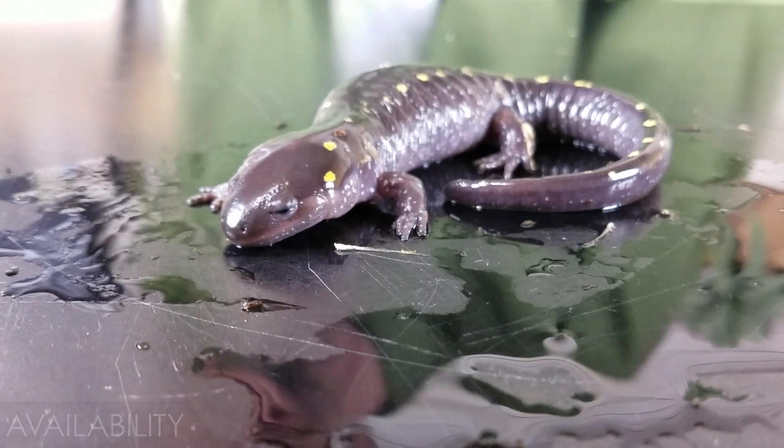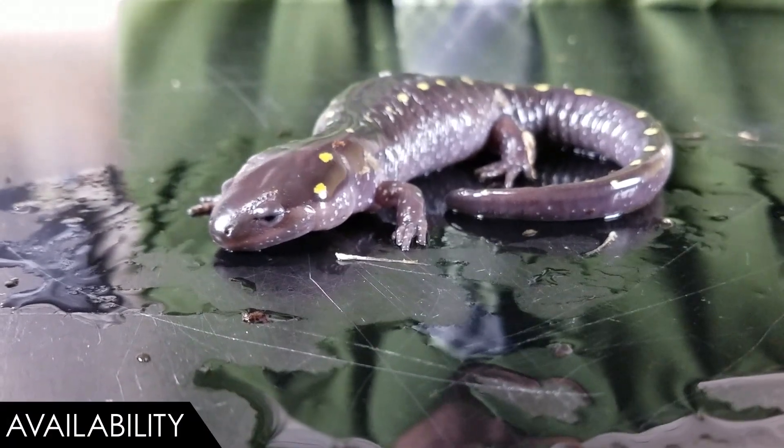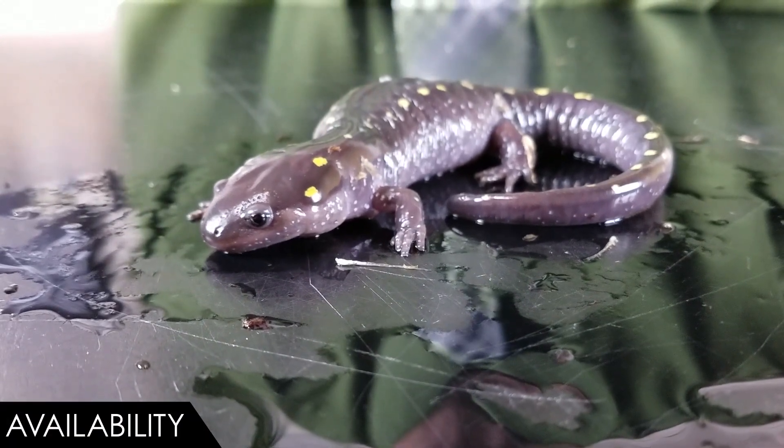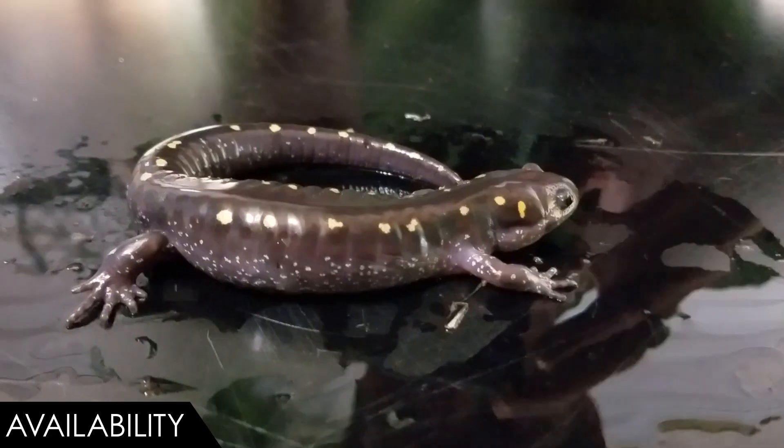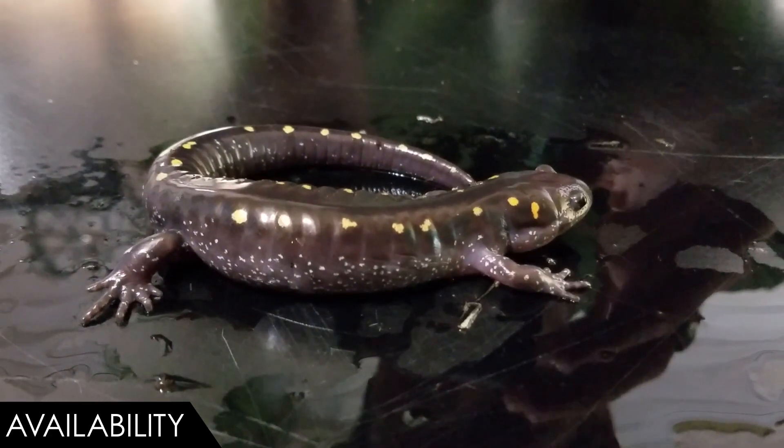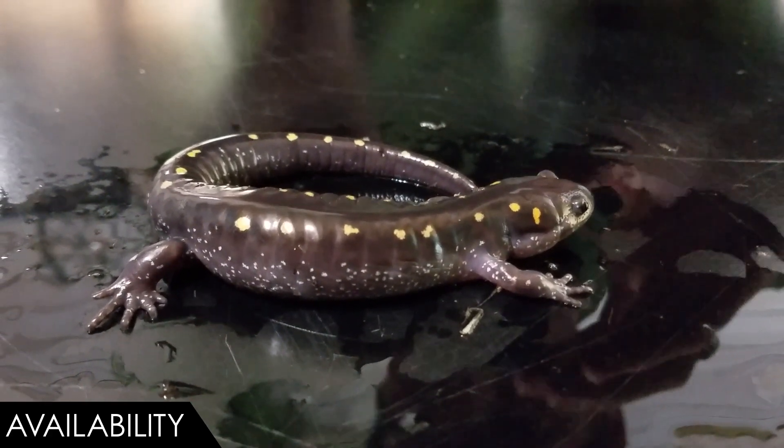When it comes to availability, we give the spotted salamander a score of 3 out of 5. These are one of the more available, at least large salamander species in the United States. Probably tiger salamanders are the only considerably more available salamander species out there. These are very similar to a tiger salamander in a lot of ways. They're just a little bit smaller.